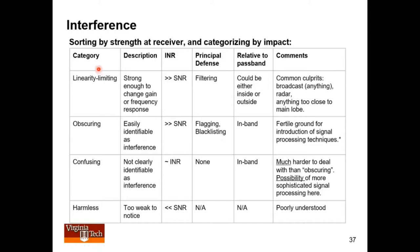Here's categories of interference as I would refer to them: linearity-limiting, obscuring, confusing, and harmless. Harmless is probably self-explanatory. Linearity-limiting means that interference is so strong that it is changing the radiometric state of the instrument—strong enough to change gain or frequency response. That's obviously going to be a case where the interference-to-noise ratio is huge compared to the signal-to-noise ratio. That's something you deal with by filtering primarily.